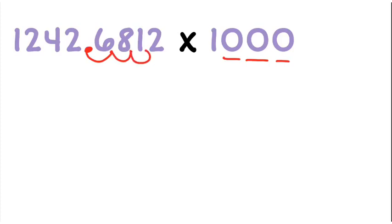So that is going to become 1, 2, 4, 2, 6, 8, 1, point 2—which is 1242681.2.